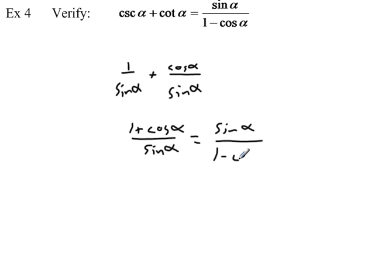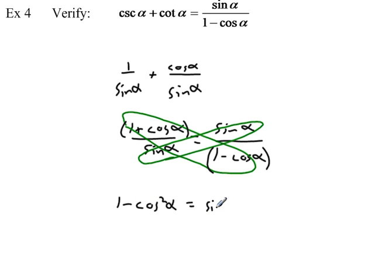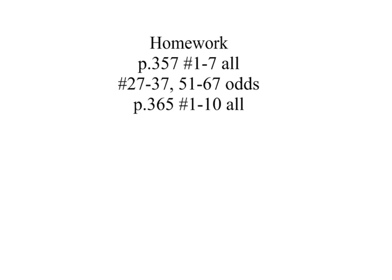This looks similar to example two, so let's cross multiply to show the two expressions are equivalent. Using the distributive property and simplifying, we get one minus cosine squared of alpha equals sine squared of alpha — that's our Pythagorean identity. Adding cosine squared to both sides gives one equals sine squared of alpha plus cosine squared of alpha, confirming the identity.